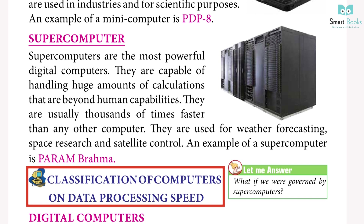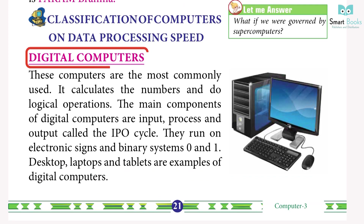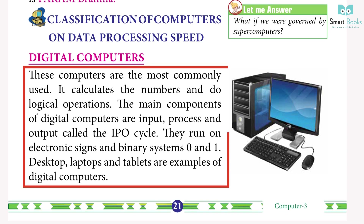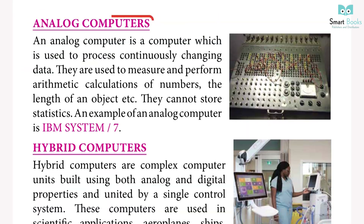Classification of computers on the basis of data processing speed. Digital computers: these are the most commonly used computers. They calculate numbers and perform logical operations. The main components of a digital computer are input, process, and output — called the IPO cycle. They run on electronic signals and binary system: 0 and 1. Desktops, laptops, and tablets are examples of digital computers.